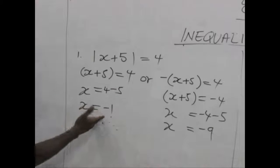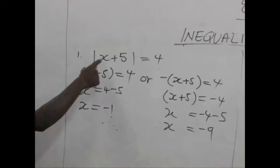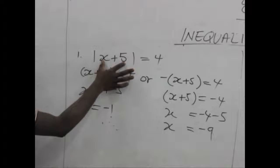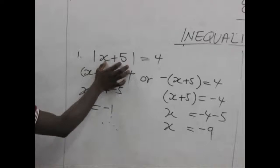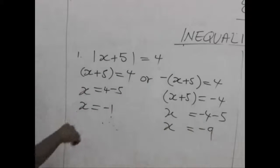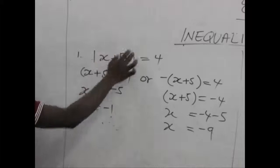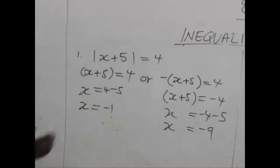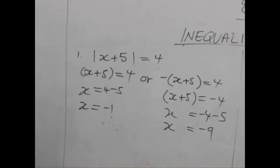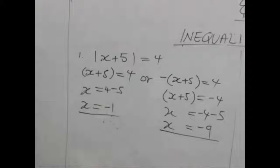Now let's see whether x equals negative 1 and x equals negative 9 fit into this equation. When we place negative 1 here, the value becomes 4, and the absolute value of 4 is still 4. When we place negative 9, we get a negative 4, and the absolute value of negative 4 is also positive 4. So both x equals negative 1 and x equals negative 9 are solutions.